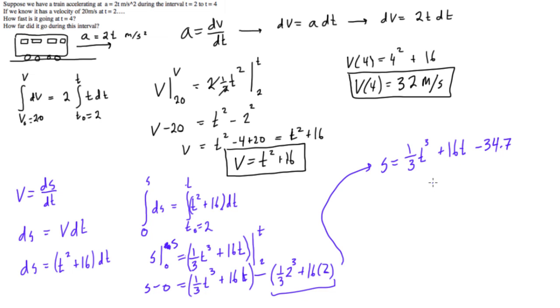So now what we want to do is, because we considered s is equal to 0 at time equals 2, we just need to find the distance that travels basically after that point. So we can just substitute in t is equal to 4. So we get distance traveled to s at 4 seconds. We get one-third times 4 cubed plus 16 times 4 minus 34.7.